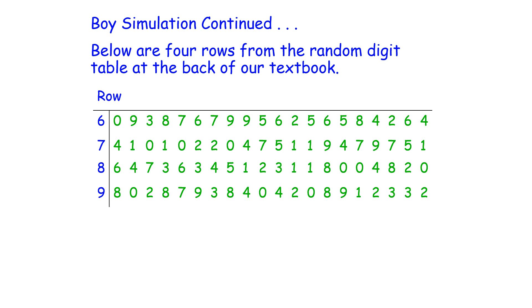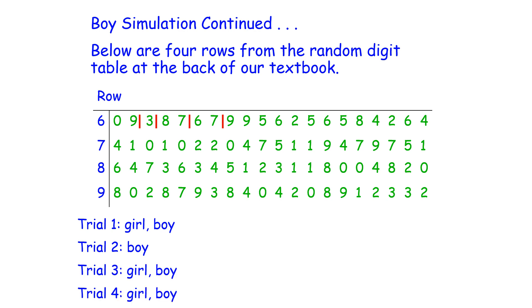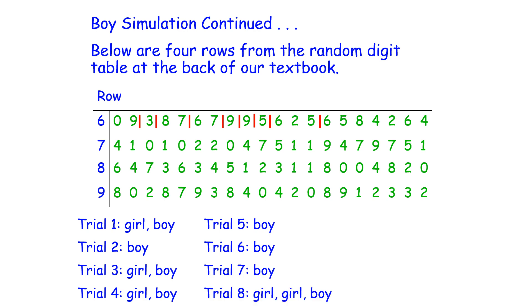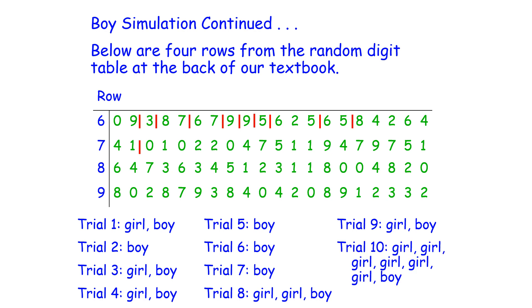Here we have four rows from a random digit table at the back of a textbook. In our first trial we see: a girl then a boy; then a boy; then a girl and a boy; a girl and a boy; a boy; a boy; a boy; a boy and a girl; then several girls followed by a boy; and another boy. Here we have 10 trials.